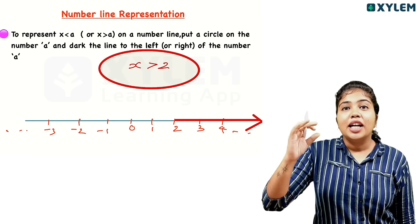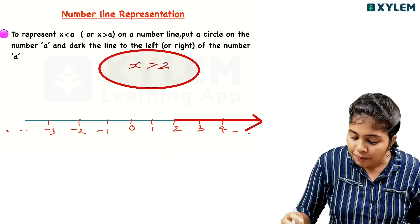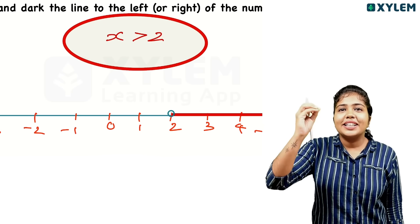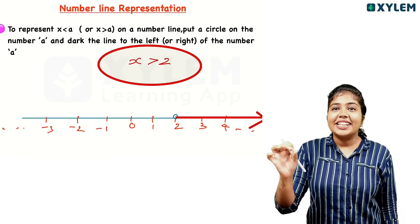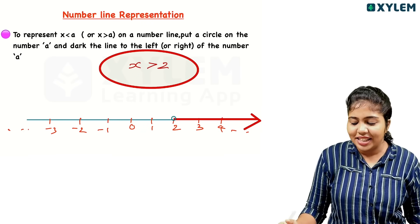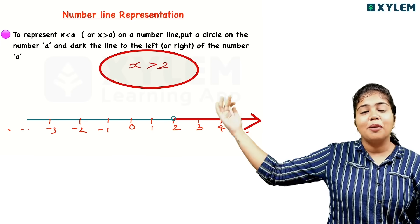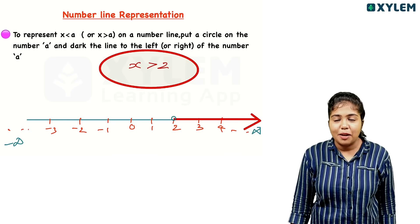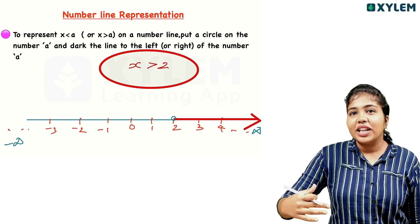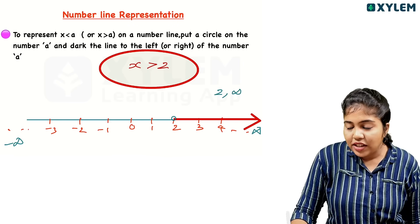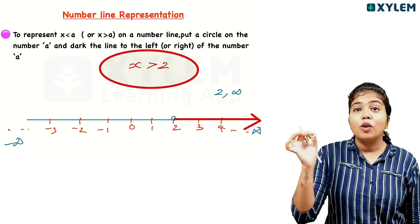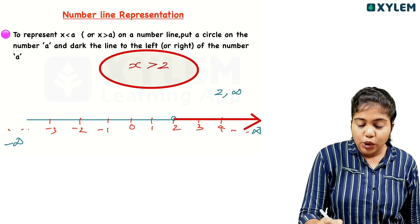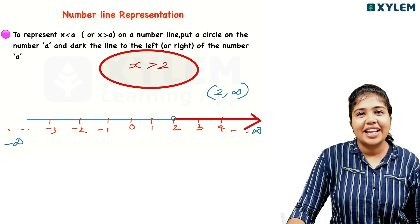If x is greater than 2, then all numbers greater than 2 are included. At 2 itself, because x is greater than 2 — not equal — it's not a dark circle, it's a hollow circle. The arrow goes to the right toward infinity. For interval representation, x greater than 2 means from 2 to infinity — open interval at 2, open bracket at infinity.